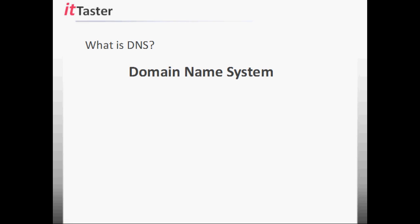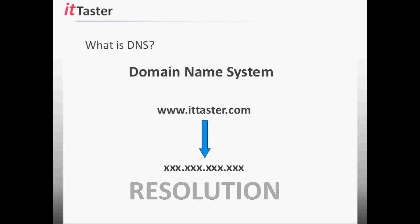DNS stands for Domain Name System and it performs a very important function — it translates computer names to IP addresses. This happens all the time when we surf the Internet and when we access resources on our local network. The process of translating user-friendly computer names into IP addresses is known as resolution. Networks rely on properly configured resolution because if you can't resolve computer names to IP addresses, users and network services won't be able to find the resources they need to access.